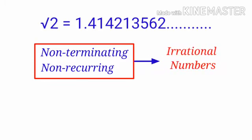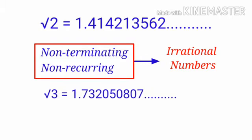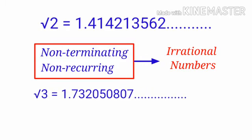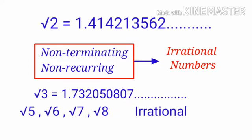Consider √3. The value of √3 equals 1.732050807 and so on. Also find the value of √5, √6, √7, and √8. You will find all of them are non-repeating and non-terminating decimal numbers.